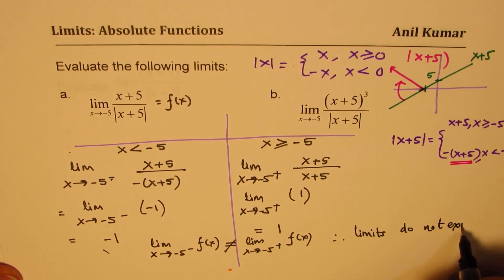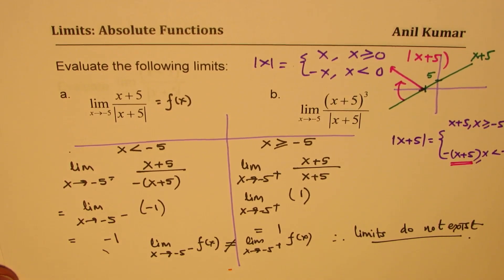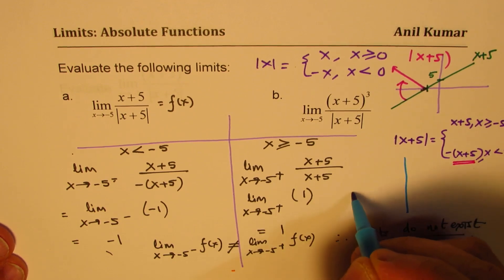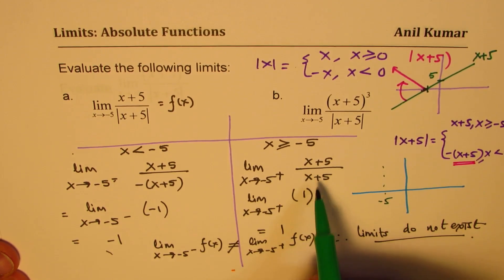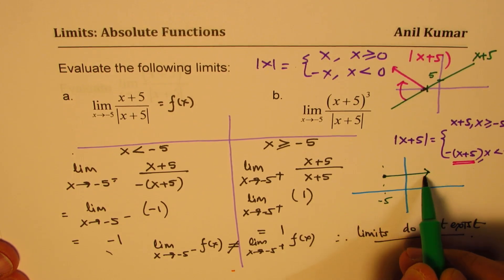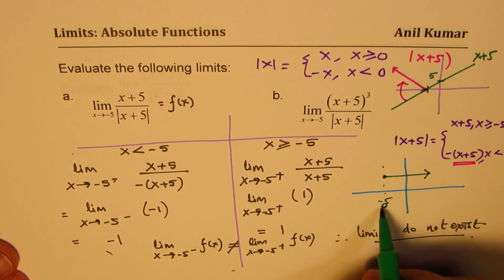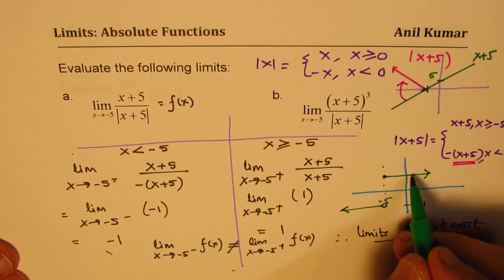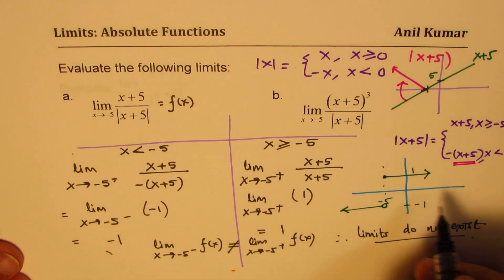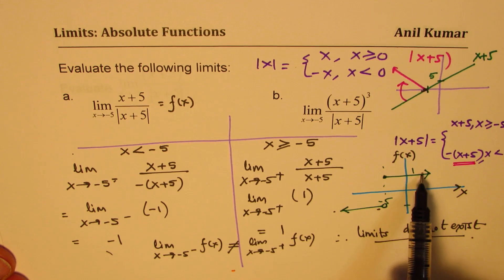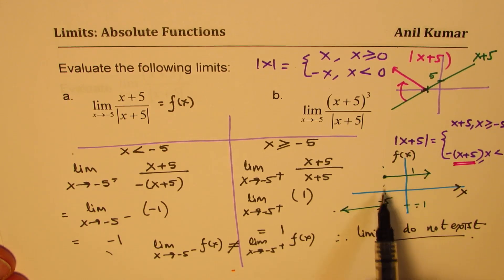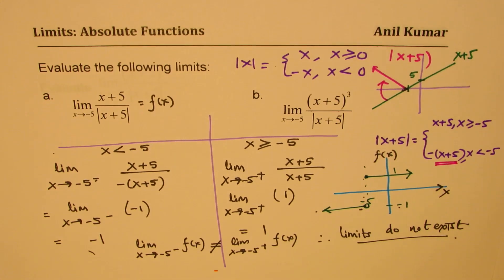If you sketch this function, at x equals minus 5 the right side is the constant 1, and the left side is minus 1. You can see a discontinuity: approaching from the left you get minus 1, approaching from the right you get plus 1. The limit does not exist at minus 5.